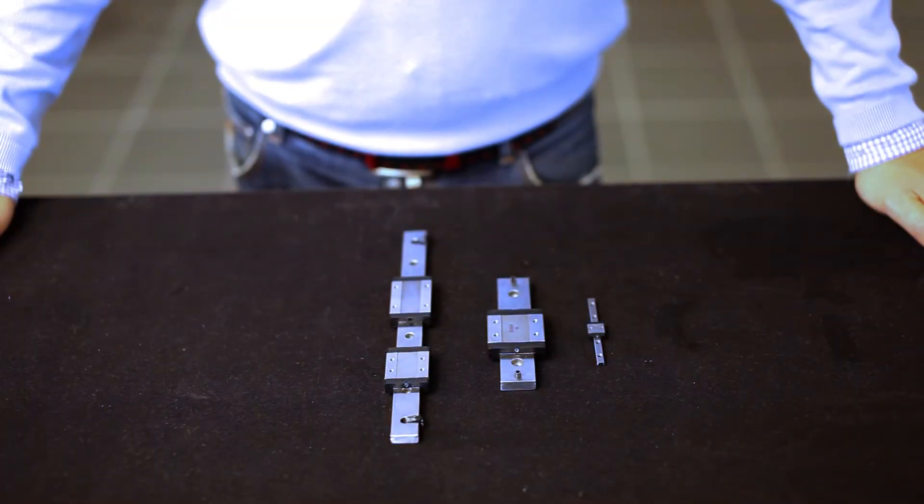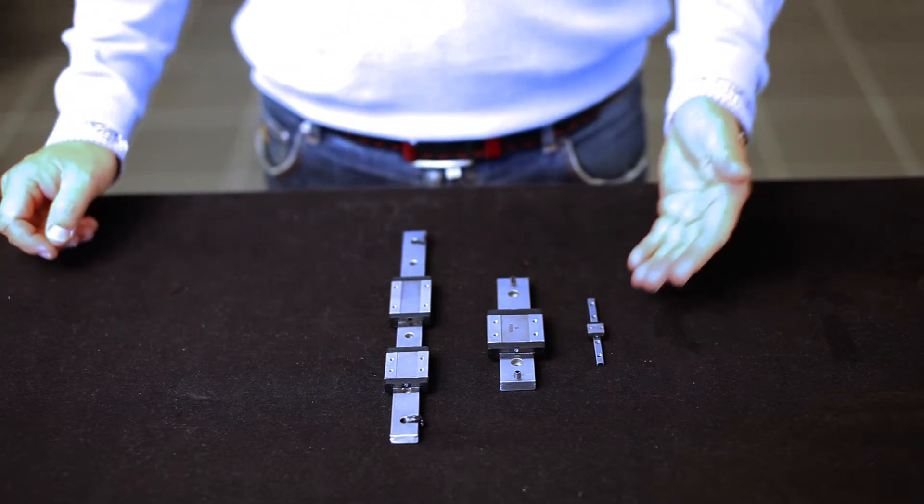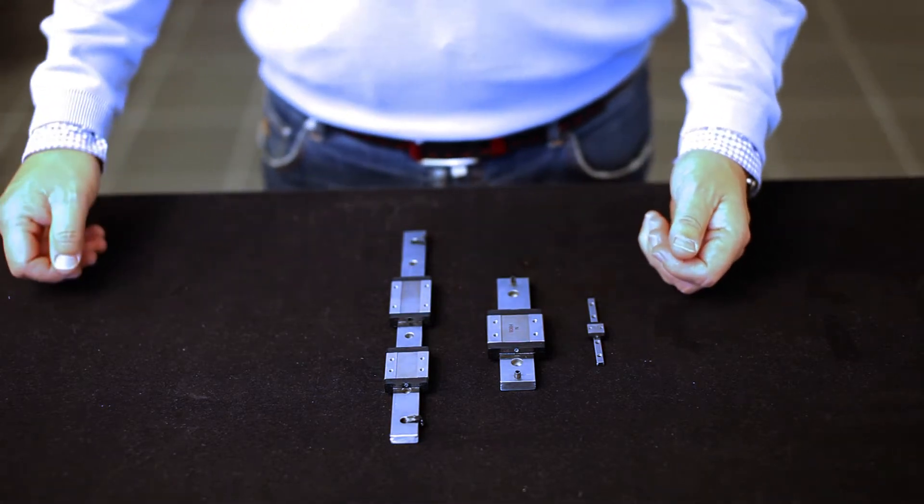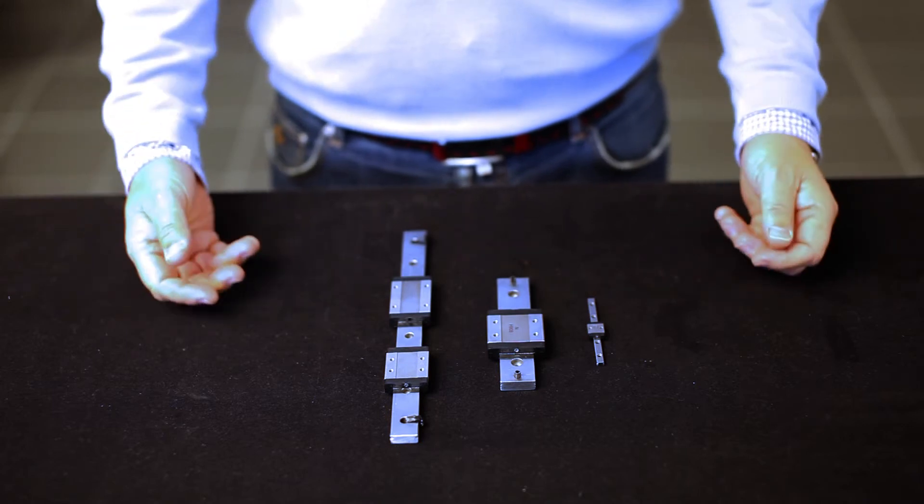Miniature rail guides. Our stainless miniature program includes sizes from a total height of 4 mm from bottom of rail to top of slider up to 16 mm.